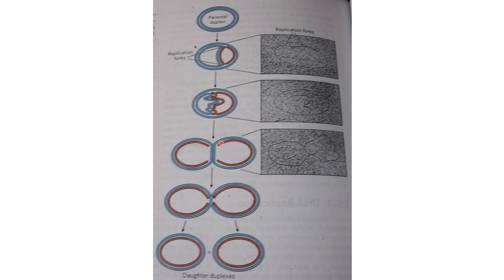Finally you have the two strands. The original parental strand separates out, and you get a completion of this ring, and then you have daughter duplexes present at this point, visible again under electron microscopy.